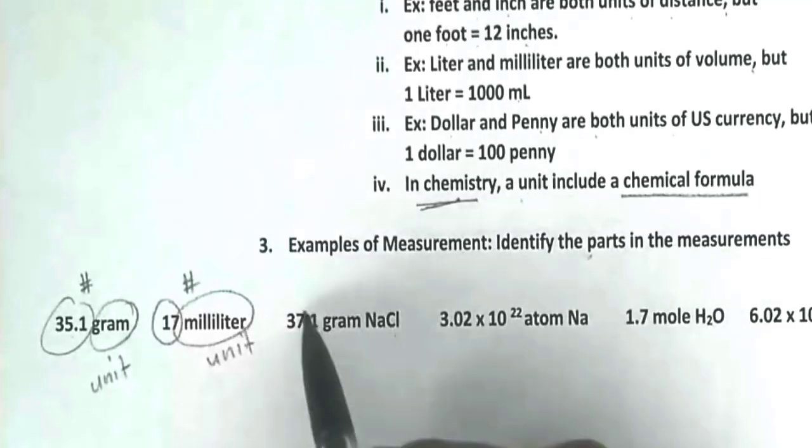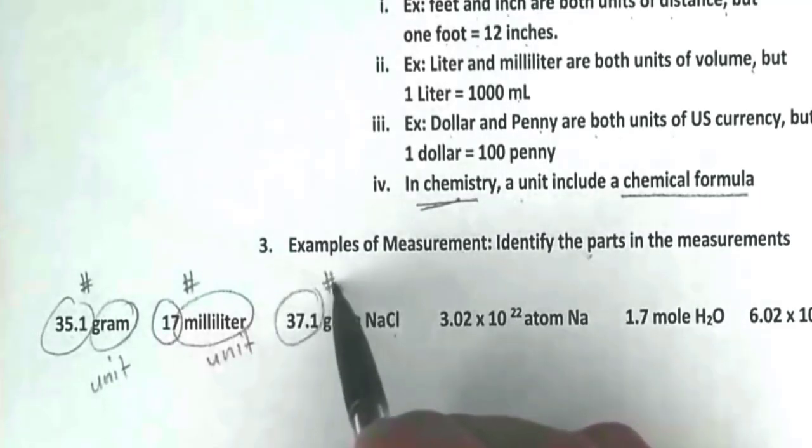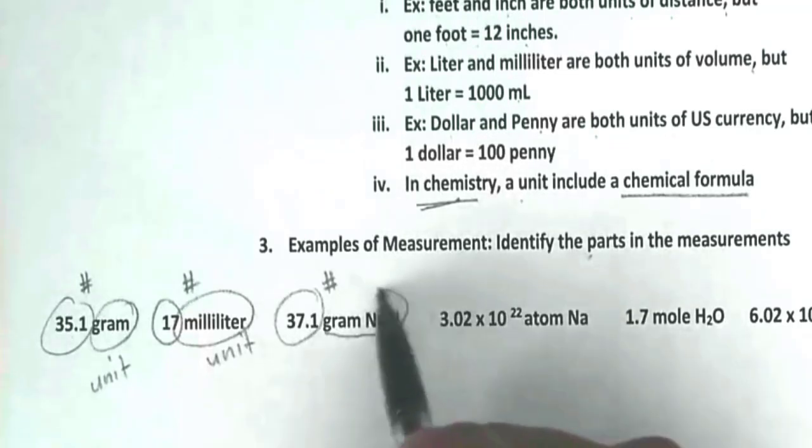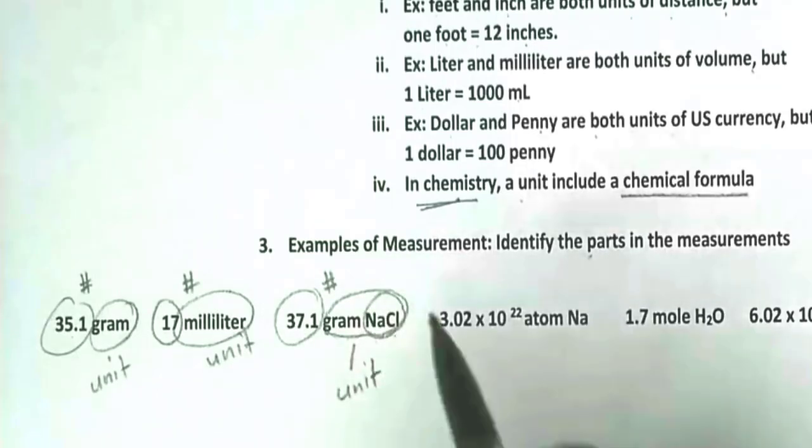This number is the number part. And gram of NaCl, that would be the whole entire unit that has the chemical formula. So NaCl is the chemical formula.